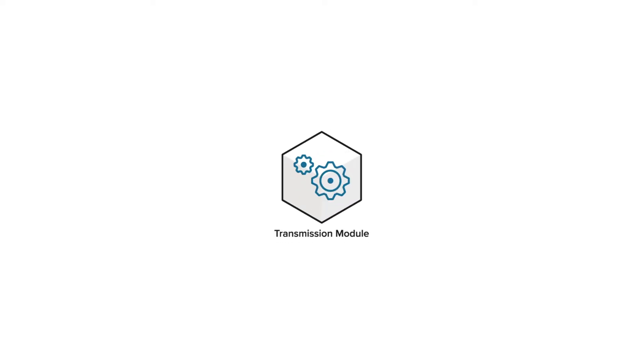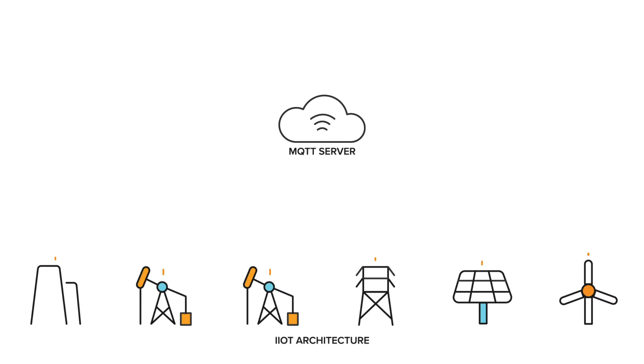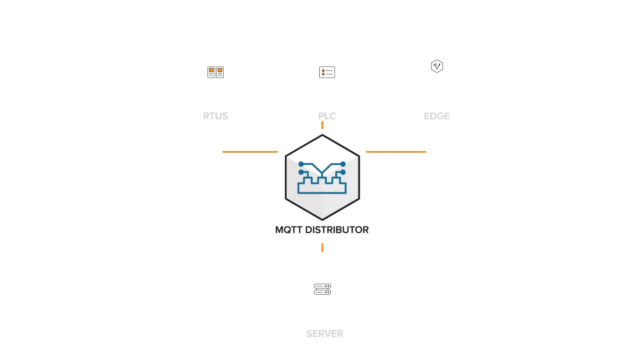For more data, the Ignition MQTT Transmission module can be installed on a server and comes with unlimited connections. Both use Sparkplug and include everything you need to capture and transmit data to a central MQTT server, locally or in the cloud. The MQTT server enables clients to connect, publish, and subscribe to data securely. There are many MQTT servers on the market, and Ignition works with all of them, and even has its own: the MQTT Distributor module.